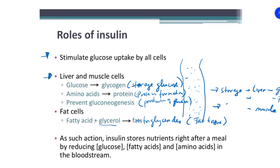In between meals, when the body senses low blood sugar, the opposite processes occur. Instead of preventing gluconeogenesis, gluconeogenesis will happen and glucose will be produced. The liver cells will convert glycogen back to glucose, and the muscles will use their glycogen to help create glucose. That is what happens when the body is in need of glucose.